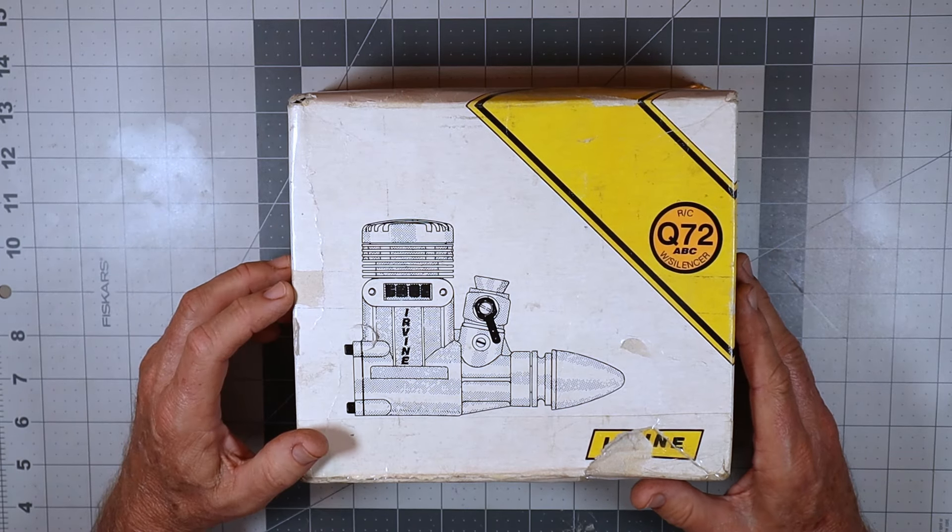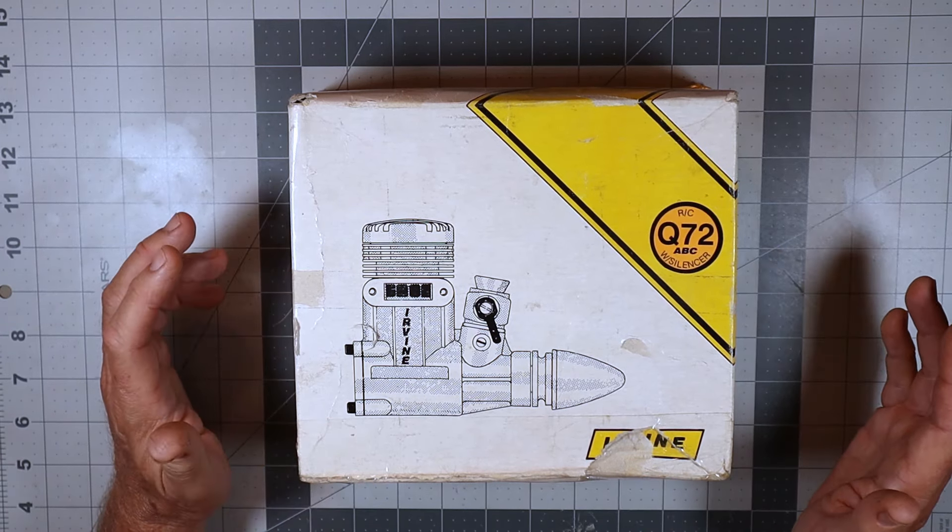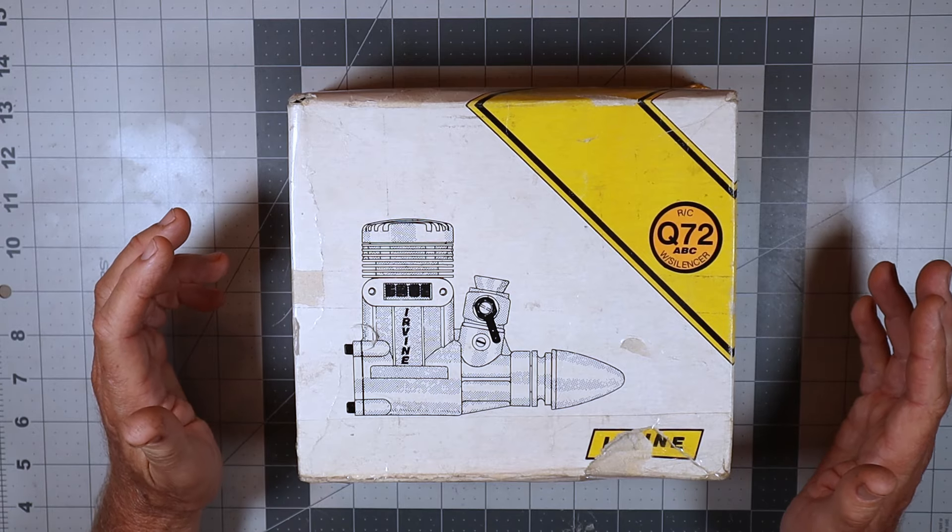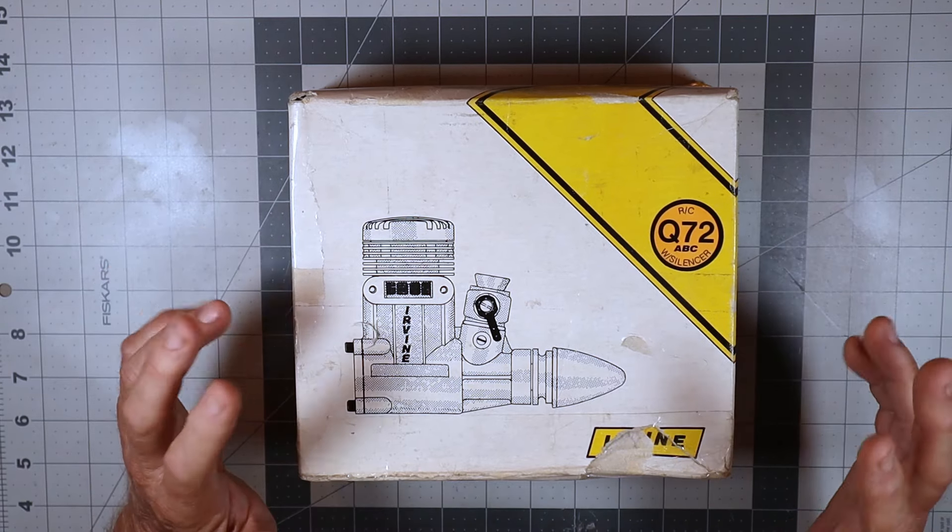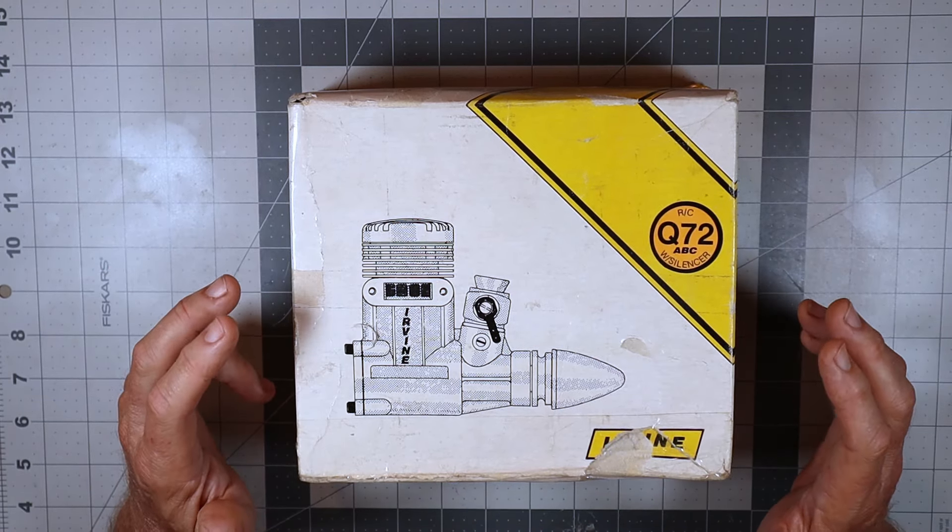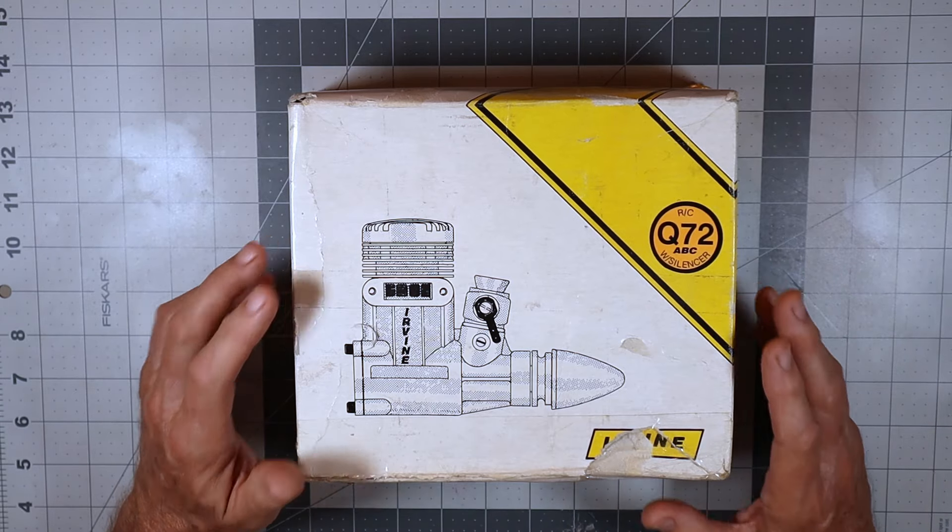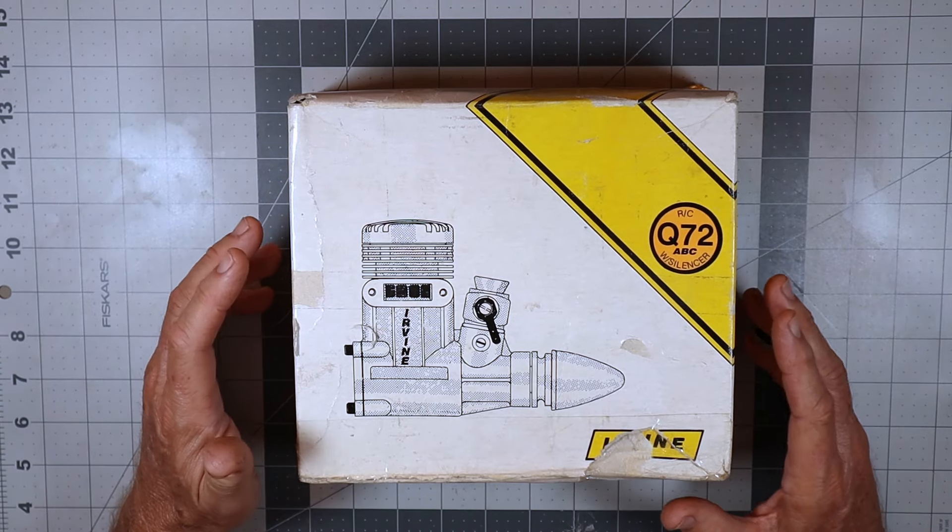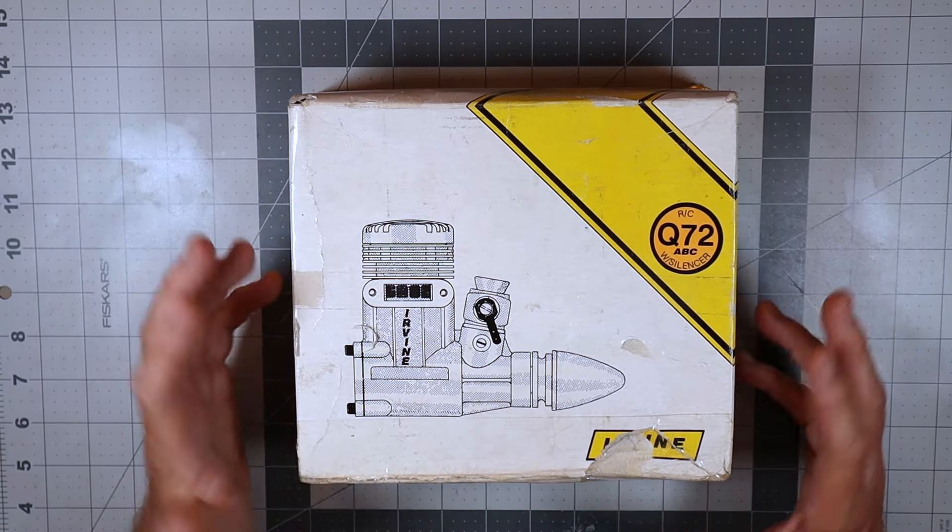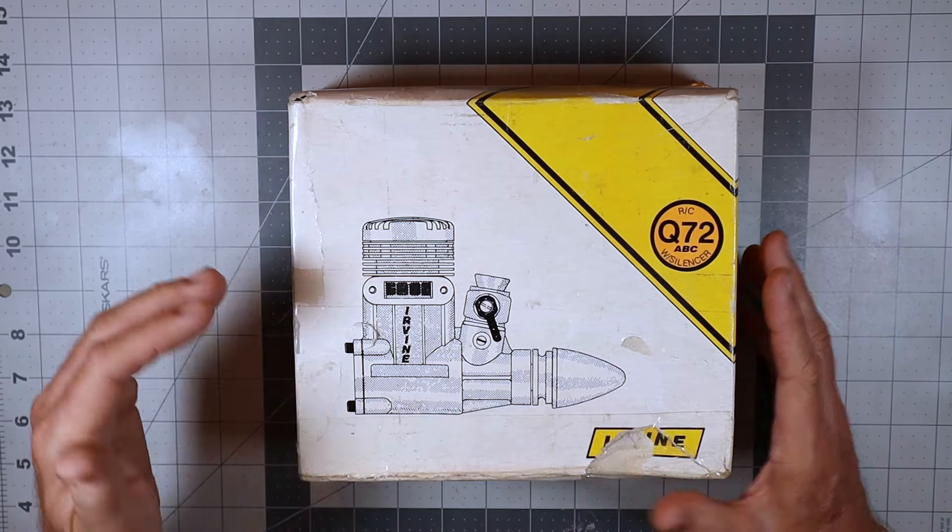And apparently Don had bought this on eBay a few years ago in what, according to eBay seller, was near new condition. He has never run it or really done anything with this engine yet, so I guess I'm gonna be the first one to run it since he's owned it, which is kind of an honor.